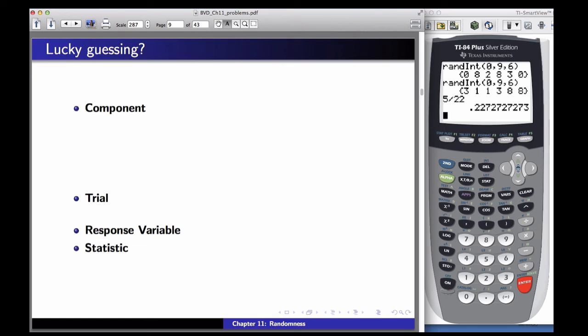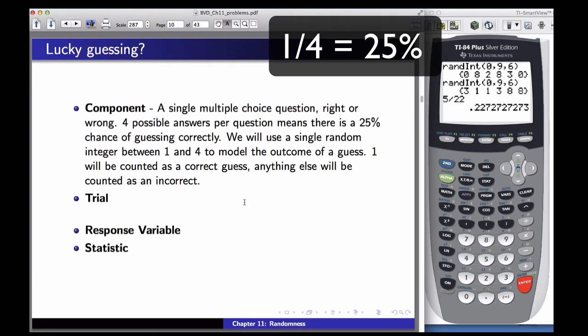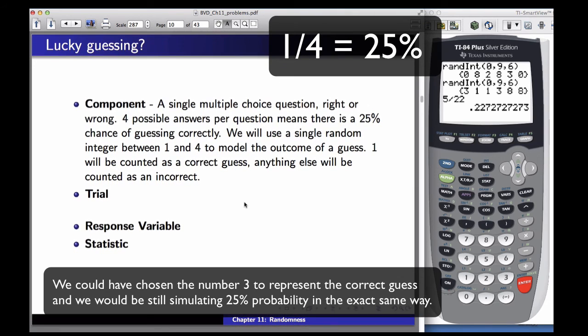We need to set things up from the components. A component here is going to be a single multiple choice question, right or wrong. Four possible answers per question means there's a 25% chance of guessing correctly. So we'll use a single random integer between 1 and 4 to model the outcome of a guess. 1 means it was correct and anything else means incorrect.